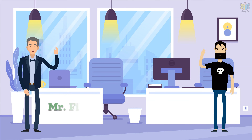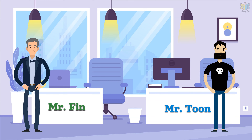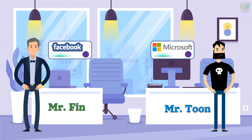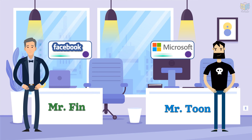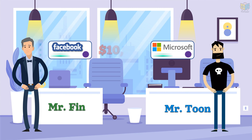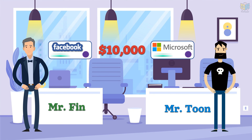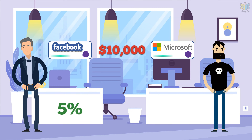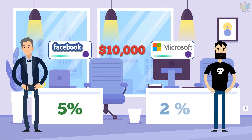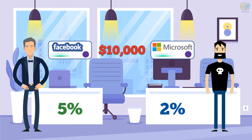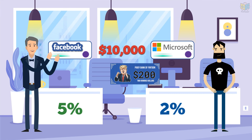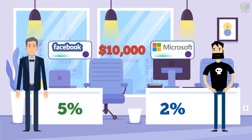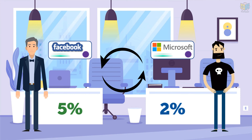For example, Mr. Finn exchanges the return generated by his shares of Facebook with the return generated by the shares of Microsoft held by Mr. Toon at the end of the year. Both of them hold shares worth $10,000. If Facebook gives a return of 5% and Microsoft gives a return of 2%, Mr. Finn will give $500 to Mr. Toon and Mr. Toon will pay $200 to Mr. Finn. Thus, both of them are able to get a return on the other's share without actually owning it.